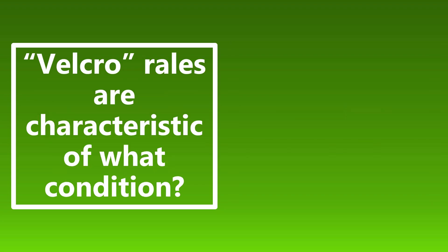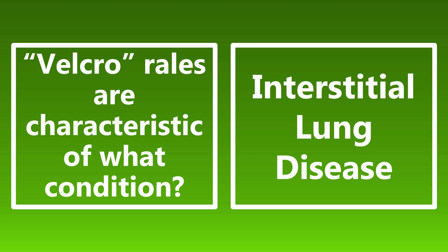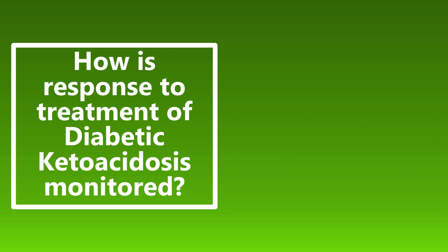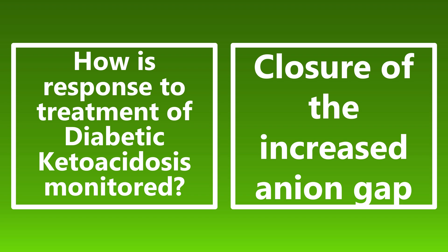Velcro rales are characteristic of interstitial lung disease, most notably pulmonary fibrosis. These are dry-sounding rales that sound like velcro separating — hence the name. If you see that description, know it's seen in interstitial lung disease, specifically pulmonary fibrosis. How is response to treatment of diabetic ketoacidosis monitored? This is monitored with closure of the increased anion gap. We're not looking at serum glucose or ketone levels — it is closure of that elevated anion gap.